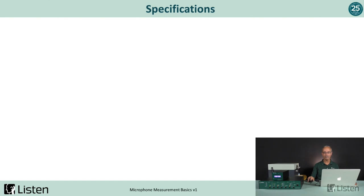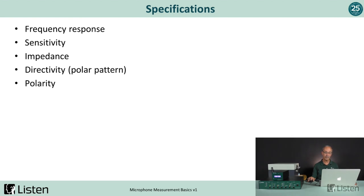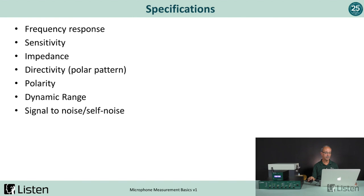Now let's talk about microphone specifications and the important ones. Obviously frequency response is important — the frequency response of our microphone should at least match the range of signals we want to capture, and it should be relatively flat without any coloration. It's always good to know the sensitivity, impedance, and directivity. It may be helpful to know the polarity — if we present a positive sound wave, do we get a positive or negative impulse out? Dynamic range, signal-to-noise, self-noise, and the type of polarization or bias required are also important specifications.